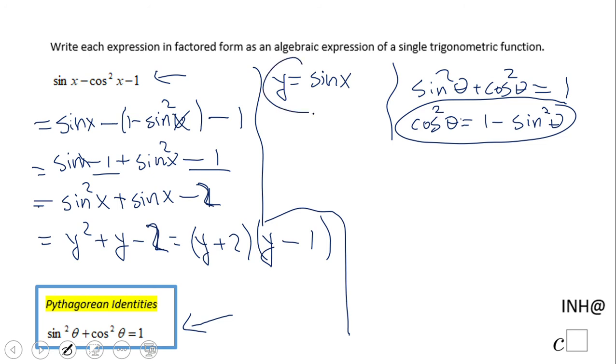We substitute back to get (sin x + 2)(sin x - 1). This is the answer for our problem. If you enjoyed it, don't forget to click the like button and come back to C squared for more help. Thank you.